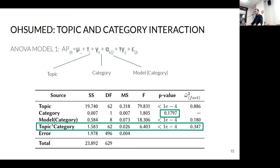The second interesting aspect is that topics interact strongly with category. Looking at the omega squared column, the interaction between topic and category accounts for approximately 35% of the impact on performance variation. This is a huge effect — almost double that of the models themselves — indicating that for a specific topic, using the proper category is essential and vital to obtaining good performance.